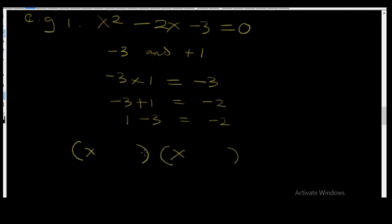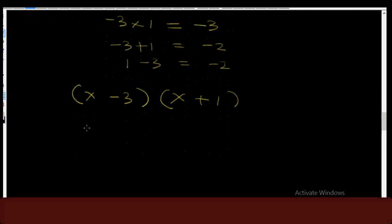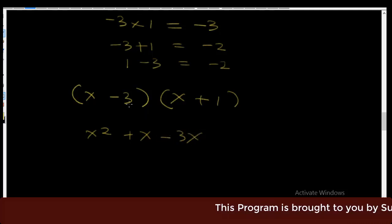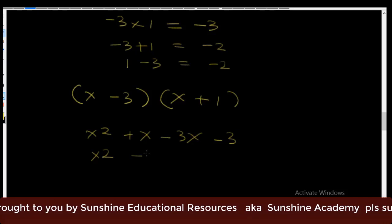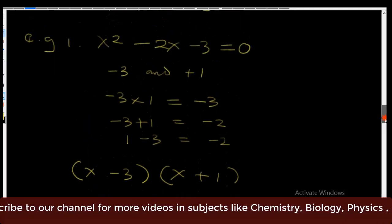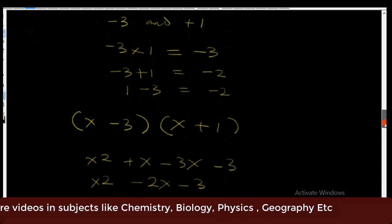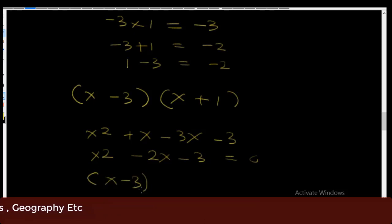Let's create the brackets. We have (x - 3)(x + 1). Let's multiply them out to verify: x times x gives x²; x times +1 is +x; -3 times x is -3x; and -3 times +1 is -3. So x² + x - 3x - 3 gives x² - 2x - 3, which verifies our original equation. So (x - 3)(x + 1) = 0.